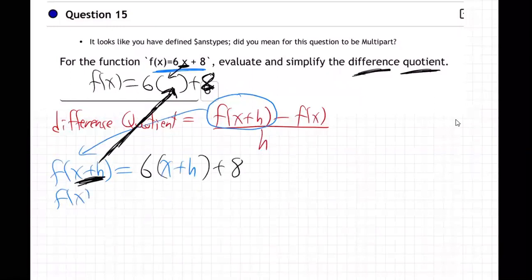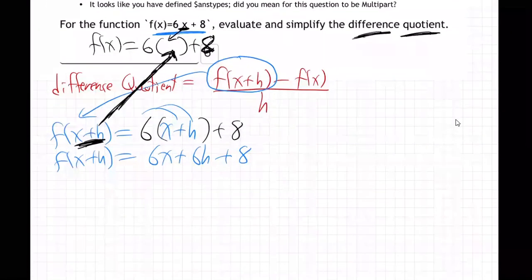So what do I get here? f of x plus h equals, and then distribute this, 6x plus 6h plus 8. Great. Okay. So that's f of x plus h. Now we can go back to the difference quotient.